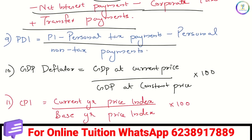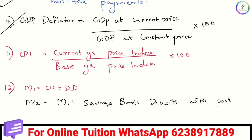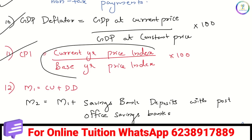GDP deflator is defined as current price divided by constant price, into 100. GDP deflator is also related to CPI — the Consumer Price Index — calculated as current price index divided by base price index, into 100.